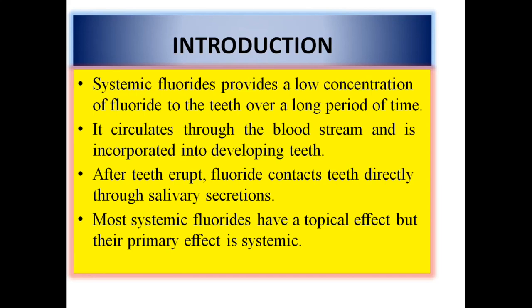The systemic fluoride should be used before six to seven years because after that there is no point — it enters the bloodstream and goes to the teeth while they're being mineralized, giving a firm, hard structure to the enamel, making it resistant to dental caries. Once teeth erupt, fluoride contacts them through salivary secretion, but that is a topical effect. The mechanism is that fluoride goes to the developing tooth until six or seven years, replaces the hydroxyl ion in the enamel lattice, and makes it stronger.